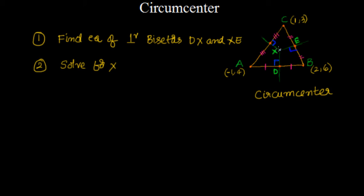To find the equation of DX, I need the slope of DX and the midpoint D. I can calculate the midpoint using the midpoint formula, and since DX is perpendicular to AB, I know its slope. Similarly, for XE I know the midpoint of BC — that's point E — and I know its slope. Using point-slope form I can get equations for DX and XE, and their point of intersection will be X, the circumcenter.